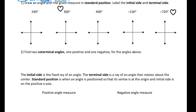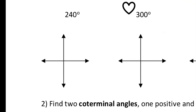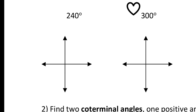It says draw an angle with the given measure in standard position. Label the initial side and the terminal side. So we have an angle of 240 degrees. To be in standard position, the initial side is always on the positive side of the x-axis. So the initial side is a ray following the x-axis, pointing in the positive direction. That's the initial side.